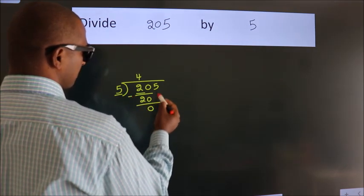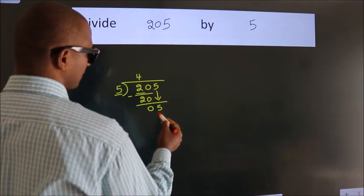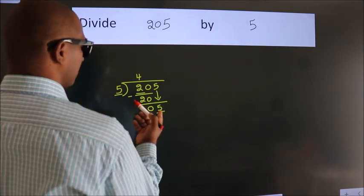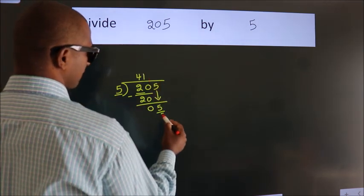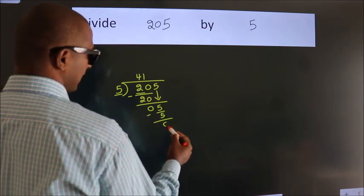After this, bring down the next number, 5. A number close to 5. When do we get 5? In the 5 times table. 5 once is 5. Now we subtract, we get 0.